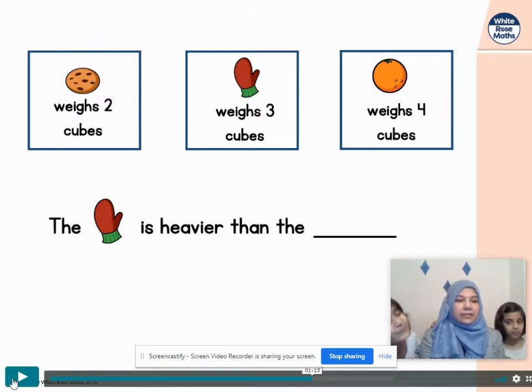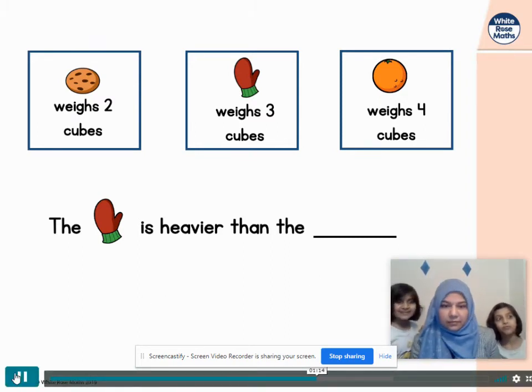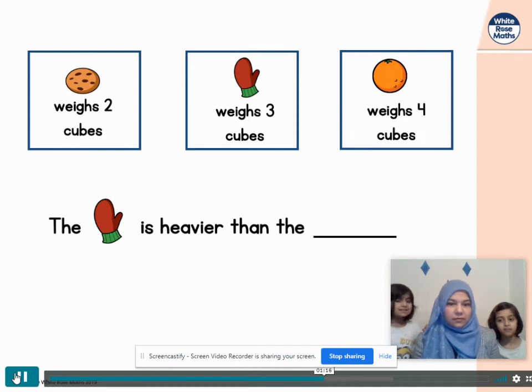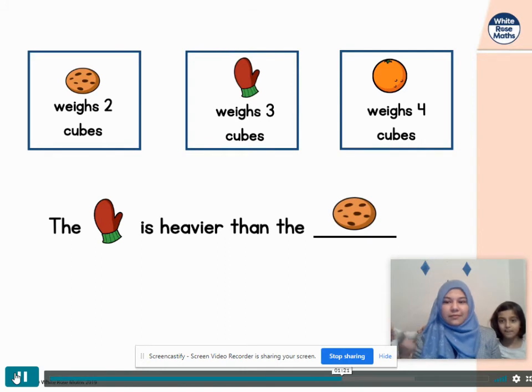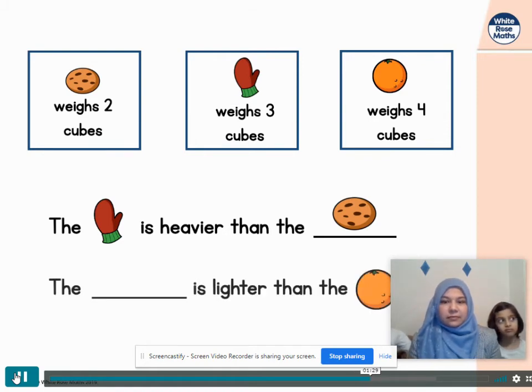Now let's see. It tells us that the mitten is heavier than the cookie. I said that! Okay, let's listen. Because the cookie only weighs two cubes and the mitten weighs three cubes.